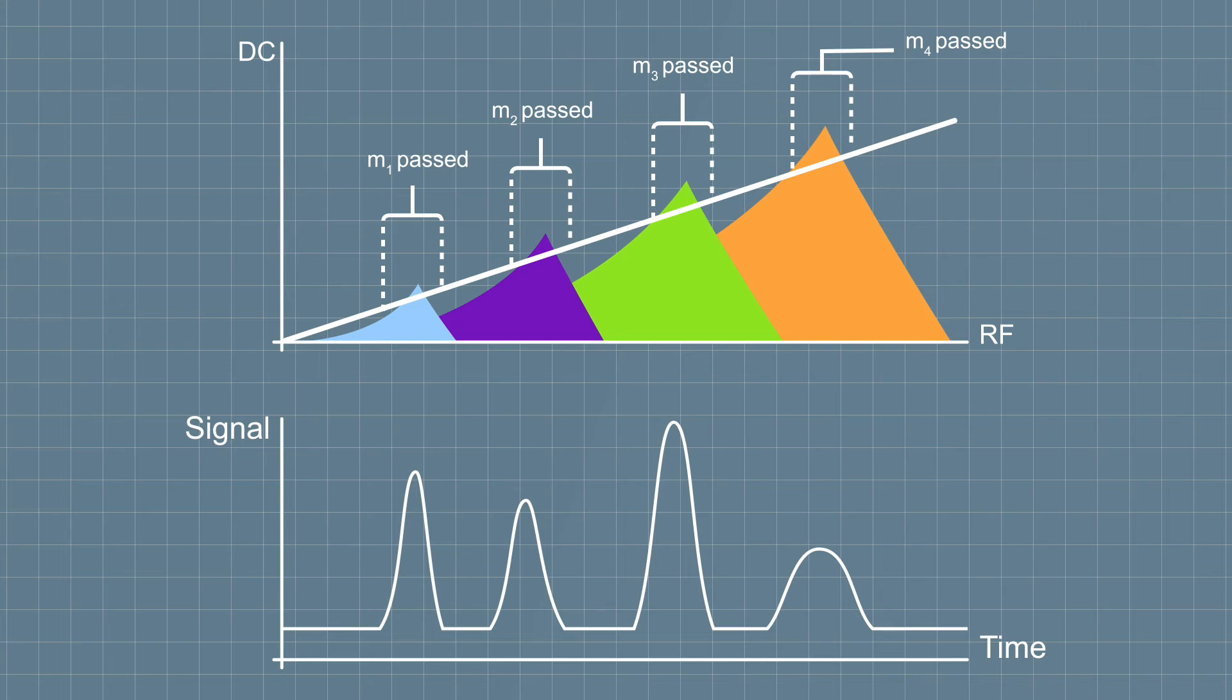We're able to resolve the masses from each other because the scan line doesn't cross two stable regions at the same time.